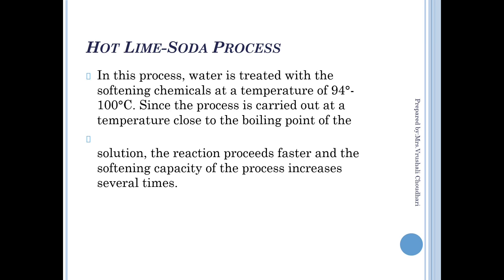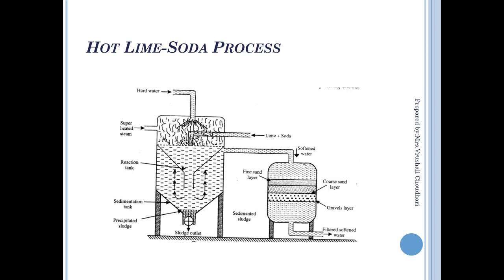To increase the speed of the soda-lime process, the reaction is carried out at a higher temperature — the chemicals are heated above 94 to 100°C — to increase the rate of reaction, make it faster, and increase water softening capacity. Hot water is passed through the tank along with lime and soda. Due to the high temperature, the reaction is faster and the hot water converts soluble calcium and magnesium salts into insoluble precipitates, which settle at the bottom and are removed by the sludge outlet.